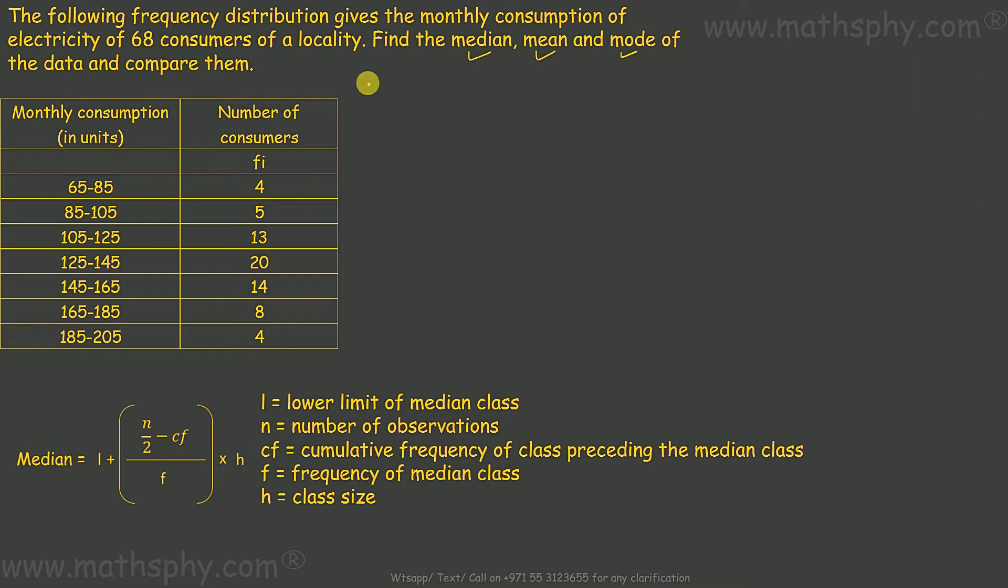In these kind of grouped data, when we are supposed to find out median, we have this ready-made formula to follow. When we have class intervals given, we need to find out median through this formula. This formula has five inputs: L is lower limit of median class, N is number of observations, cumulative frequency, frequency and class size H.